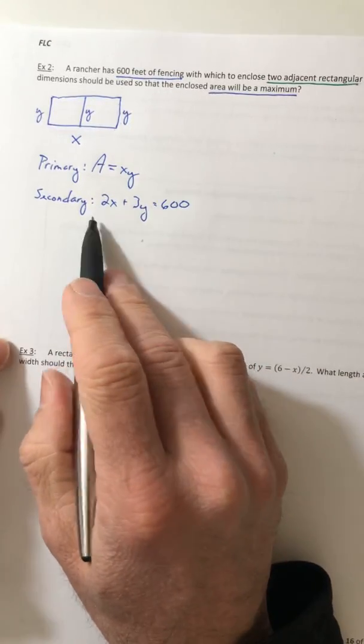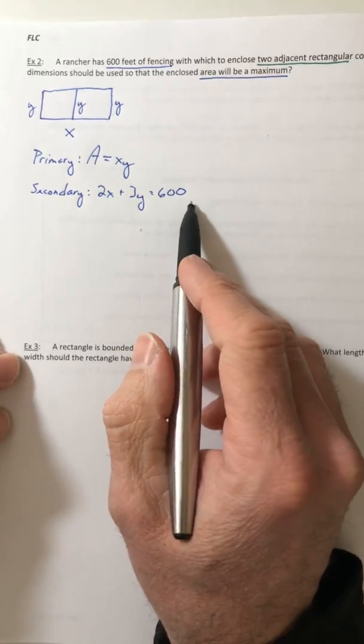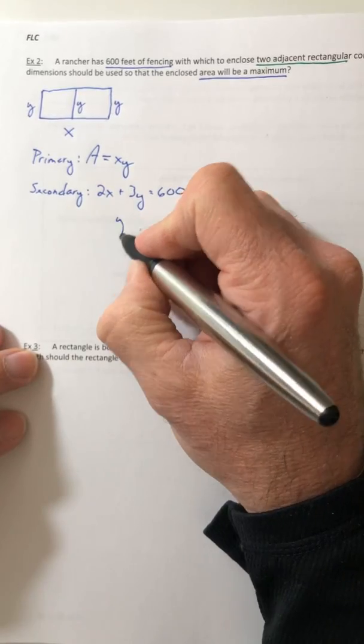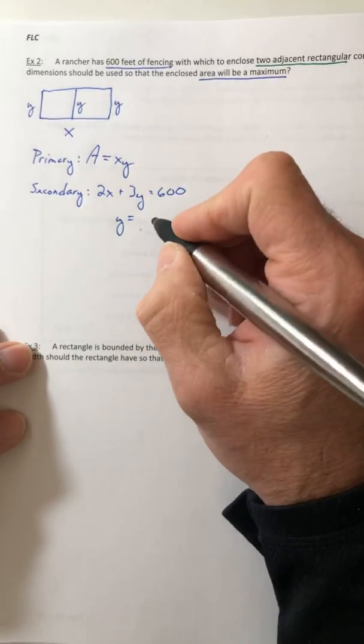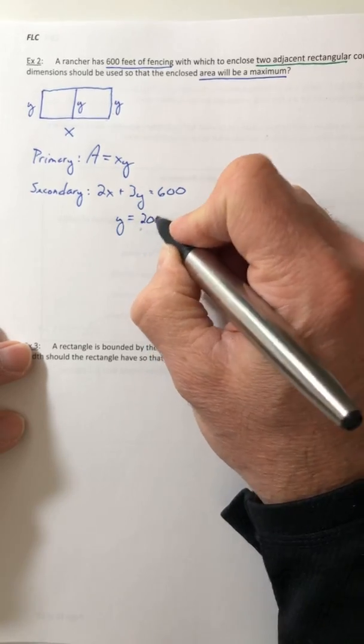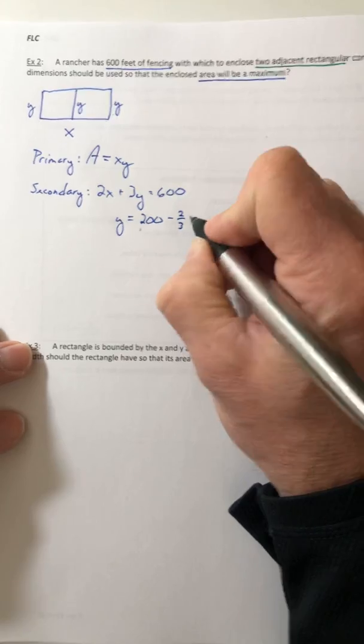So pick a variable and solve for it. You can solve for X, solve for Y, it's not going to matter. So I went with Y again, but you can choose X if you really wanted to. So the Y is going to equal 200 minus two thirds X.